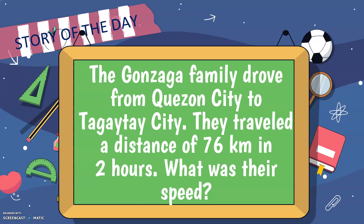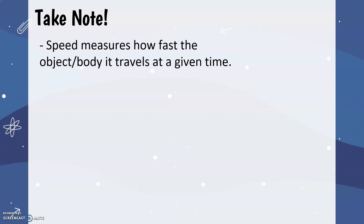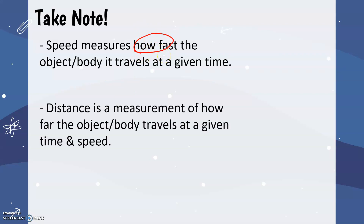Before we answer this problem, let us first understand what speed, distance, and time are. When you say speed, it measures how fast the object or body travels at a given time. It answers the question 'how fast.' On the other hand, distance is a measurement of how far the object or body travels at a given time and speed. Distance answers the question 'how far.'